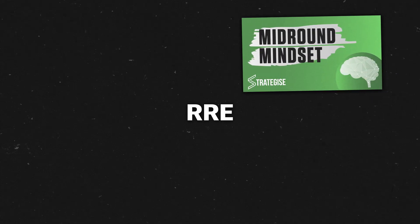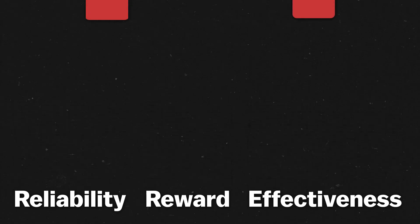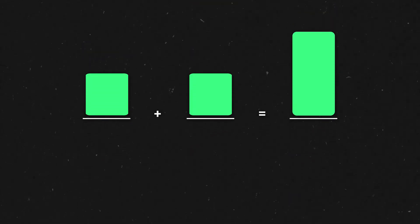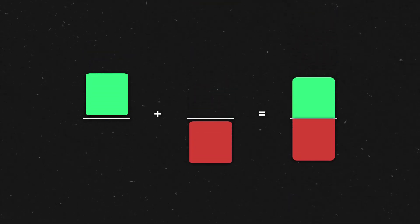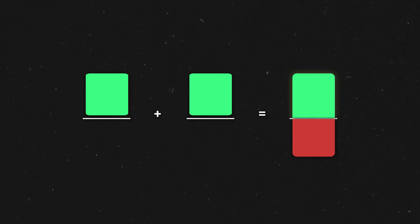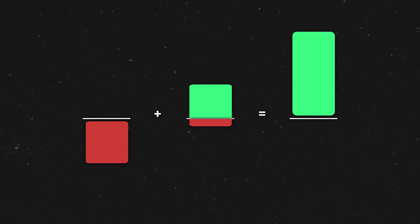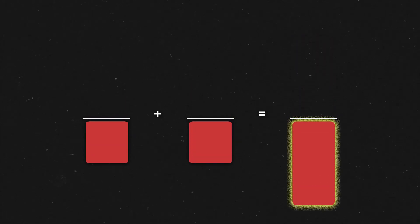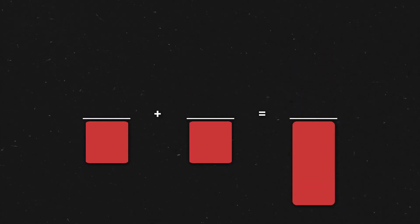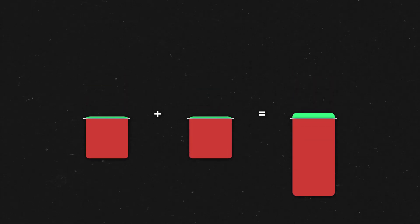We cover RRE in more detail in our mid-run mindset video. But in short, RRE is reliability, reward, effectiveness. At its core, RRE is just a way to test how good a decision is. If your intention is reliable and it has a high reward, congrats - you have an effective intention. If your intention has a low reliability and low reward, not so much. Think of RRE like a machine: you give it a bunch of variables and it spits out an answer.